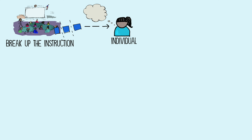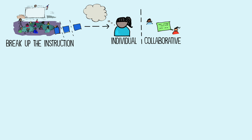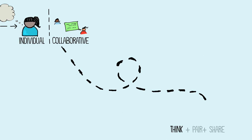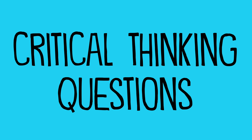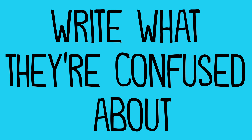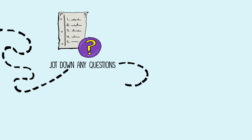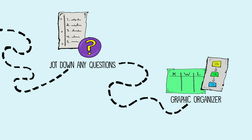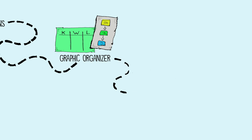Number one: break up the instruction to give students a chance to process information at an individual and collaborative level. You might do something like a think-pair-share, where students summarize what they learned or answer a critical thinking question. Students might also jot down any questions they have, or write down something they're confused about.